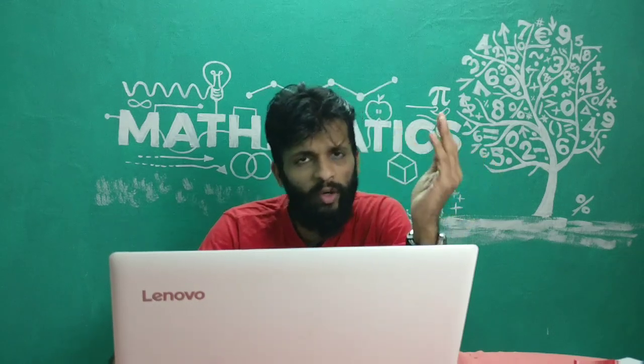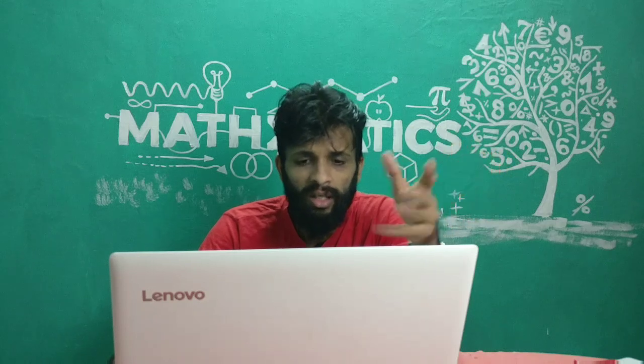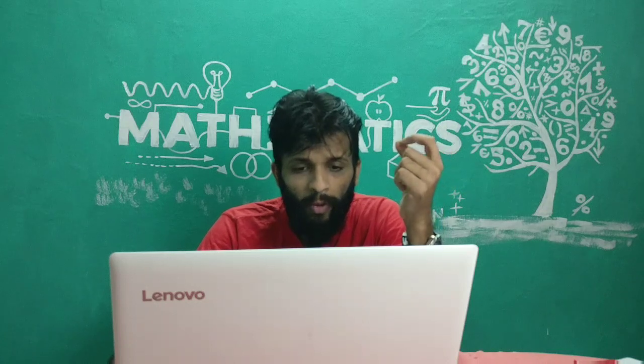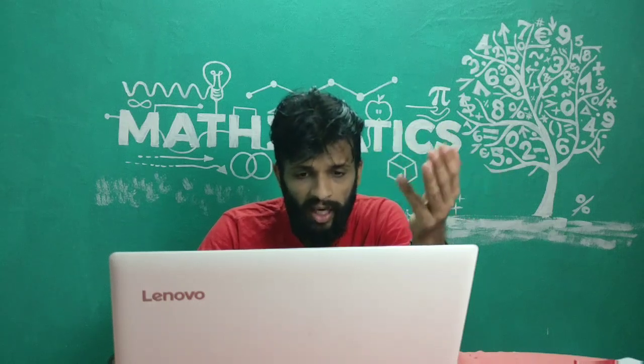Question 2d is to prove that root 3 is irrational. A video link will be in the description box — there's nothing much to discuss here, you already know how to prove it.